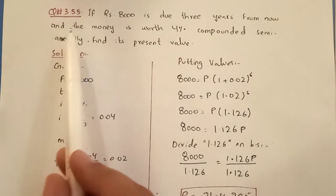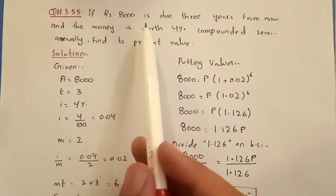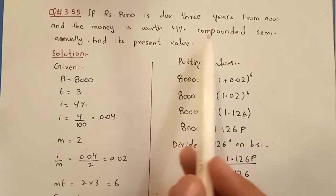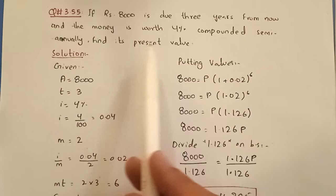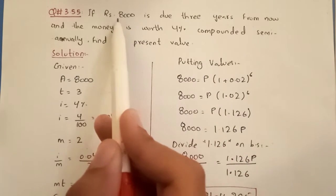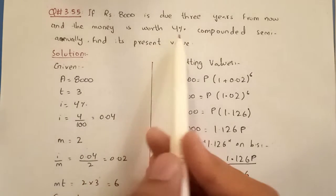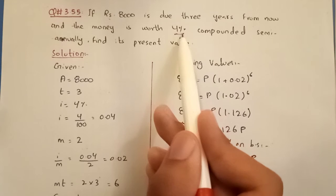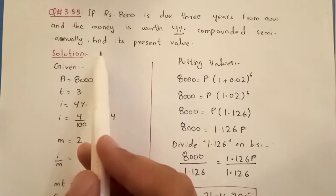Now moving to the next question. Question number 3.55: If Rs.8,000 is due 3 years from now, and the money is worth 4% compounded semi-annually, find its present value. In this question we are given a compound amount of Rs.8,000 for 3 years, rate of 4%, and compounded semi-annually means M equals 2.